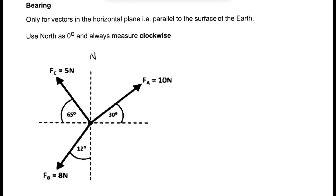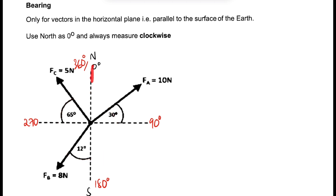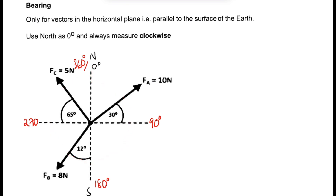This is north and this is south, so north will be zero degrees and we move clockwise — in this direction. That gives us 90 degrees, 180 degrees, 270 degrees, and back to 360 degrees. So when we do bearings, we start from zero and go 90, 180, 270, 360, moving clockwise.